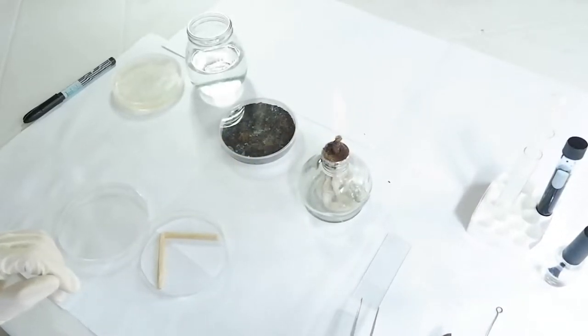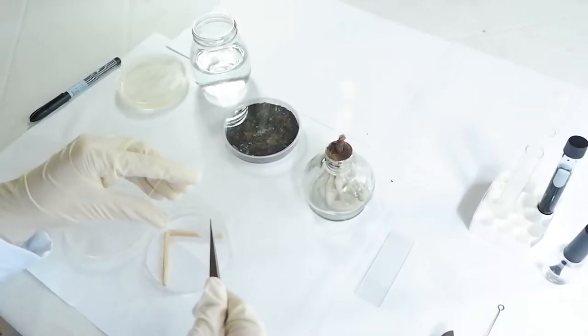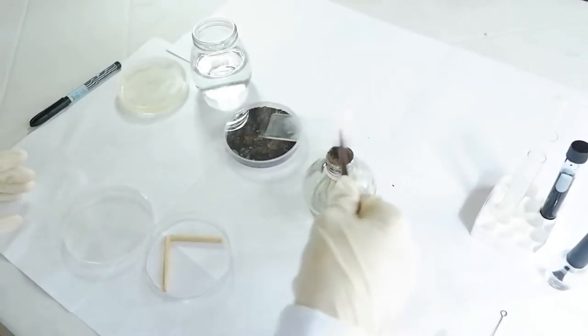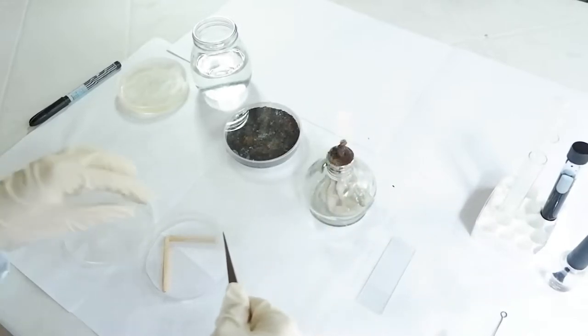Now with our sterile slides, we place them inside the MC set by passing them over the flame 3-5 times.